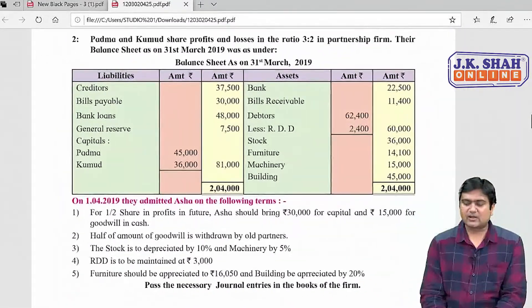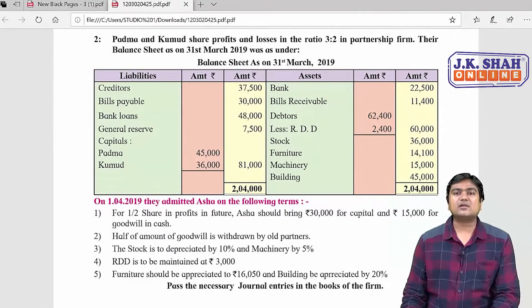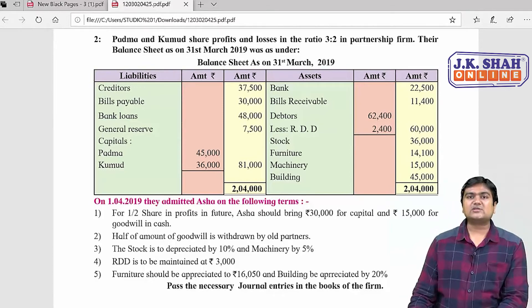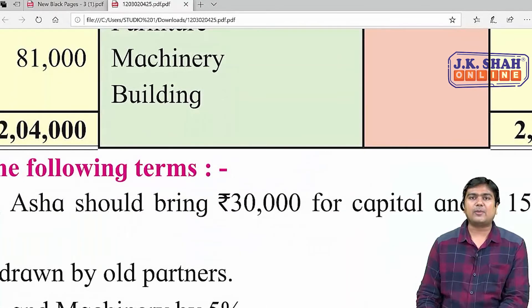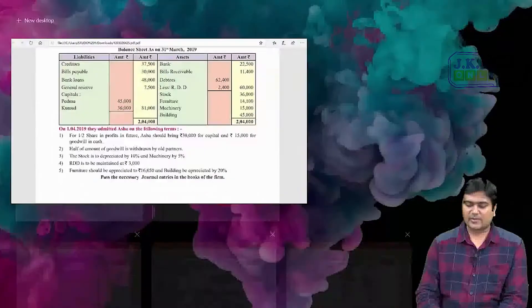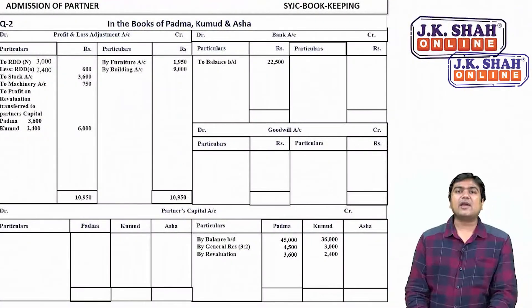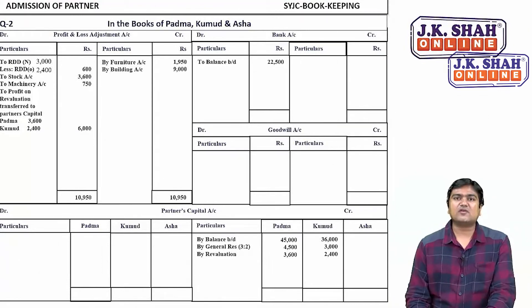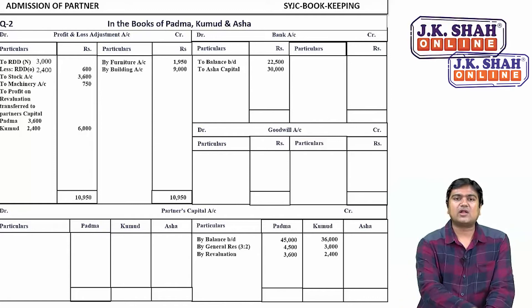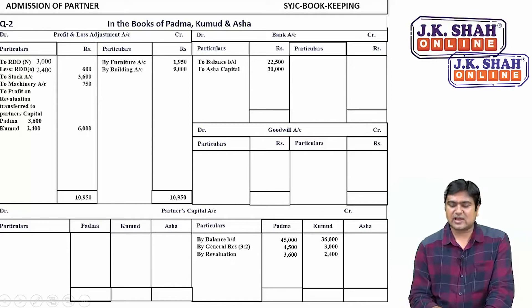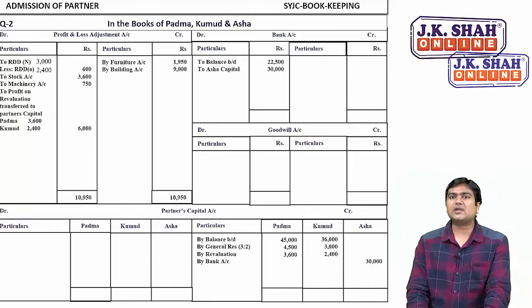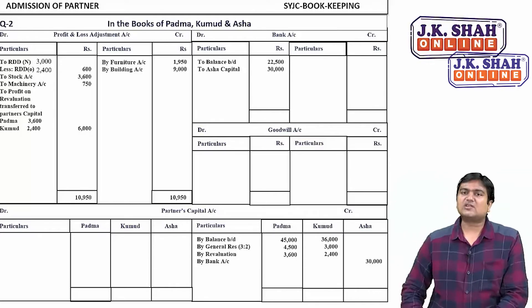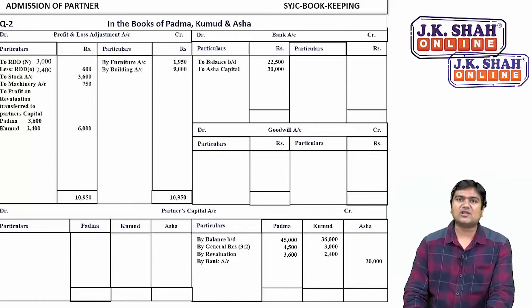Three steps are now complete: transfer of asset, transfer of liability, and revaluation. Step four: incoming partner's capital. Asha brings 30,000 for capital — money comes in, so bank account is debited. Asha is the giver, so credit Asha's capital account 30,000 rupees. On the partners' capital account credit side, write 30,000 in Asha's column.